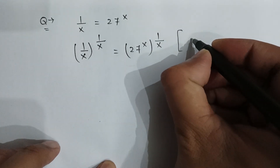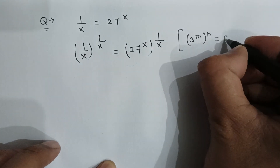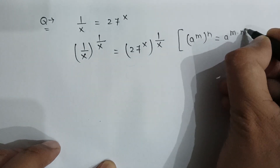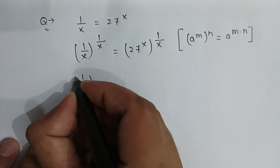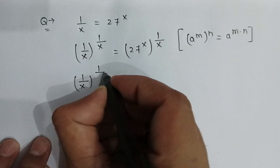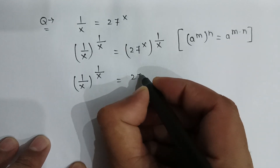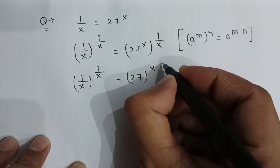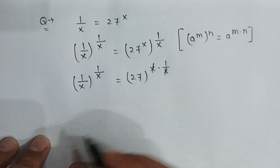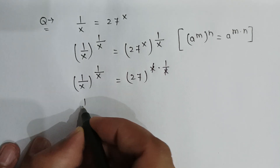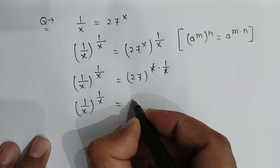As we know, if a to the power m, whole power n, is equal to a to the power m multiplied by n. So, 1 divided by x to the power 1 divided by x is equal to 27 to the power x multiplied by 1 over x. The x and 1 over x will cancel out, giving us: 1 divided by x to the power 1 over x is equal to 27.